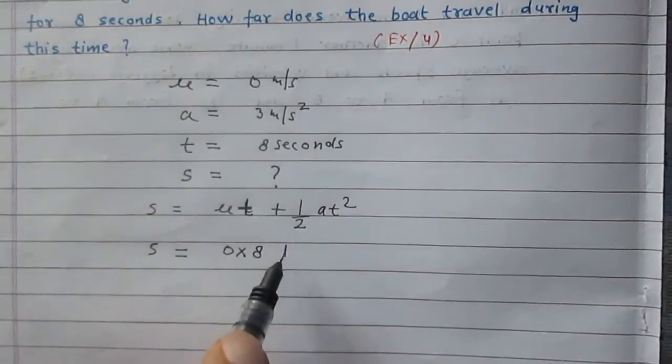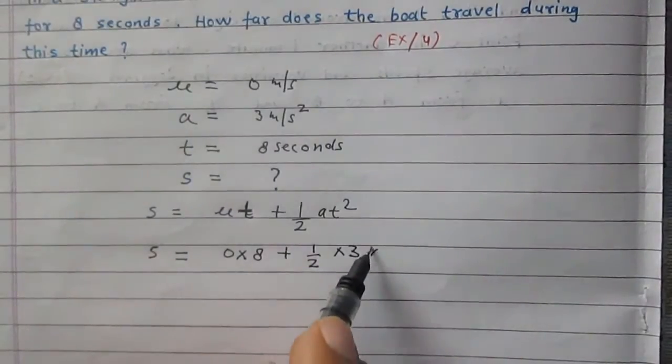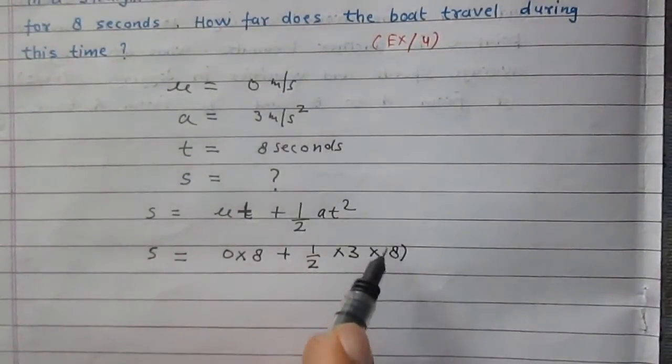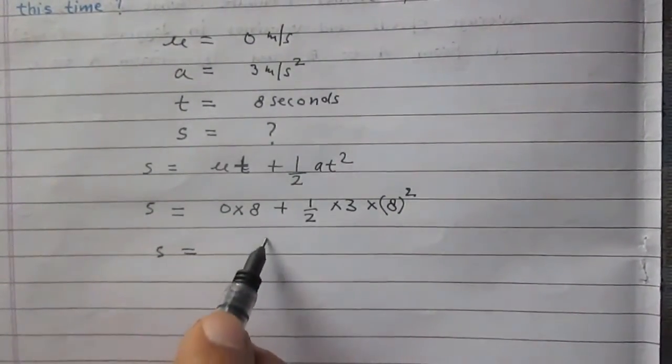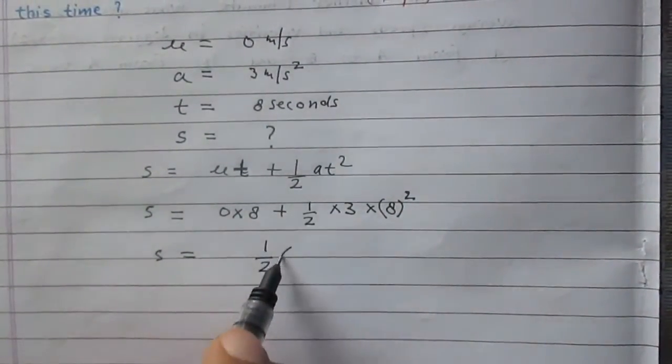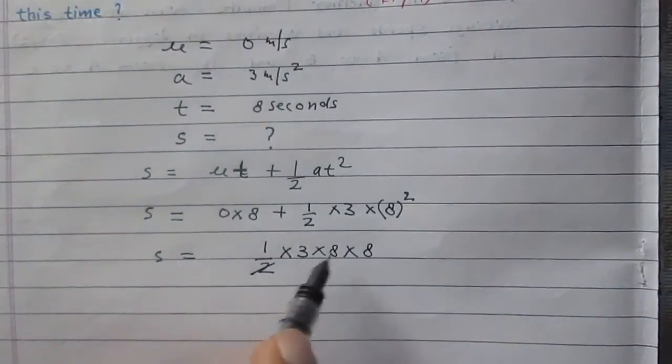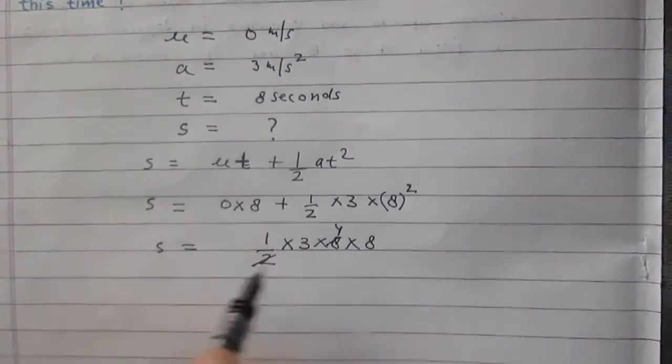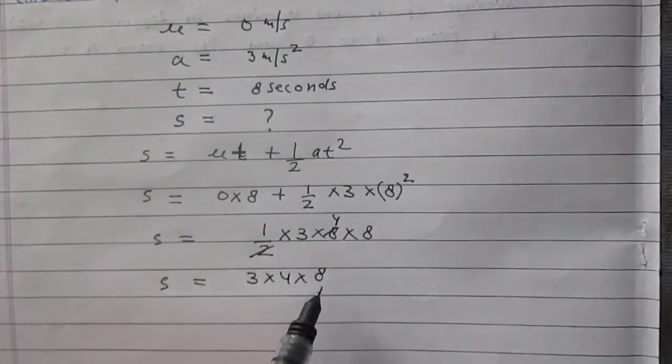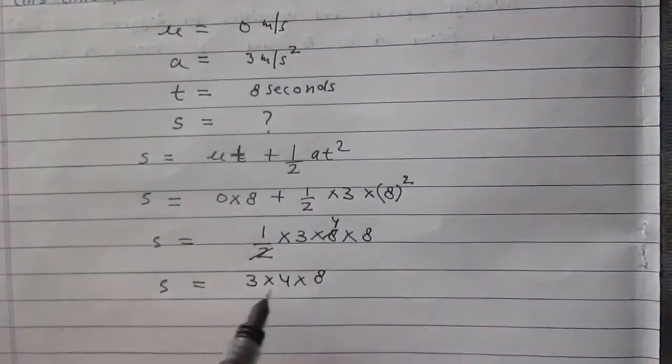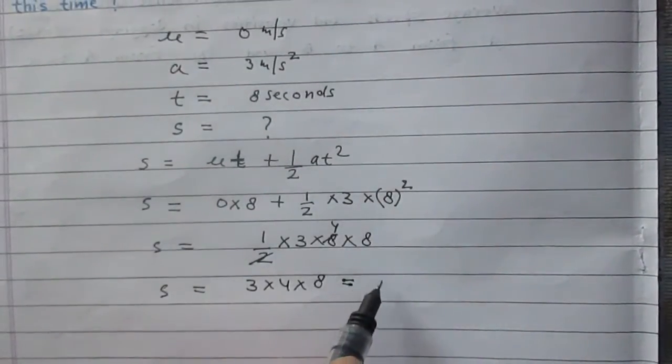So s equals 0 times 8 plus half times 3 times 8 square. This simplifies to half multiplied by 3 multiplied by 8 and then again 8. So s is 3 multiplied by 4 multiplied by 8. 3 times 4 is 12, and 12 times 8 is 96.